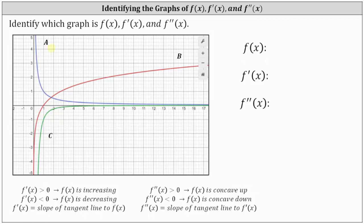Because function a is always decreasing, the first derivative must always be negative, and for function c, the function is always increasing, and therefore the first derivative must always be positive. Therefore, function b must be the original function f of x.